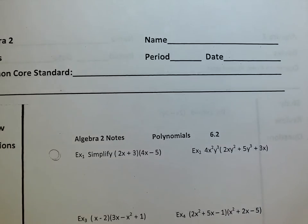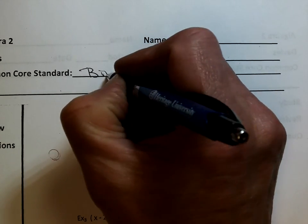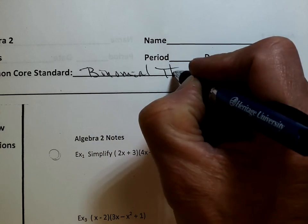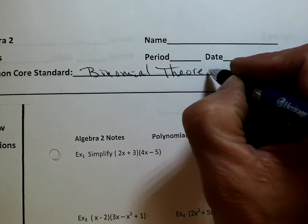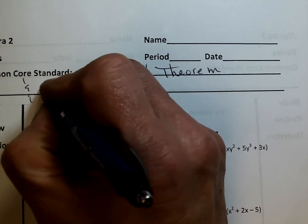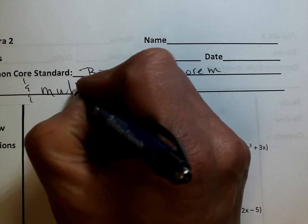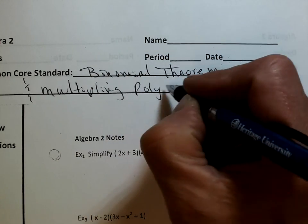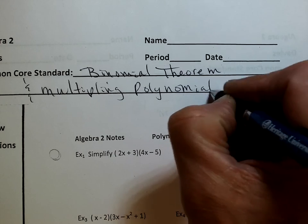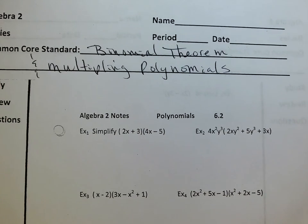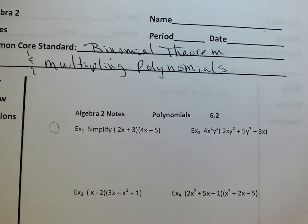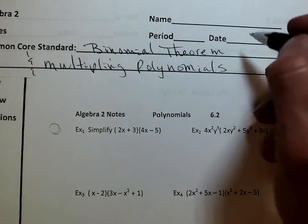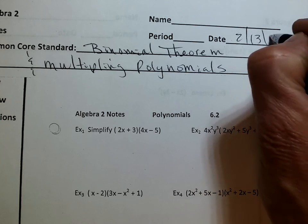Okay, so common core really has to do with the binomial theorem and multiplying polynomials. We're going to do the binomial theorem - binomial means two, and we saw that from Pascal's triangle. Day two, 13, 18.